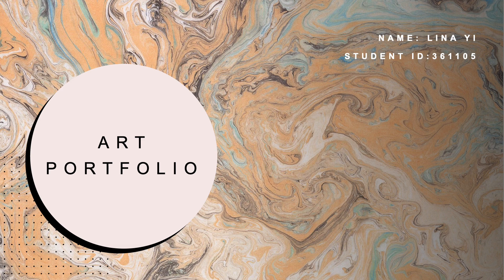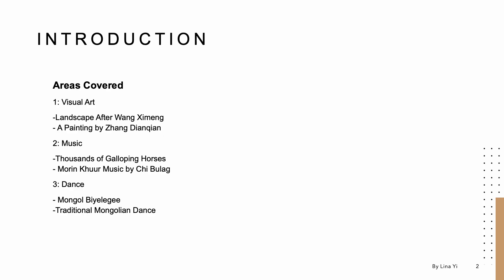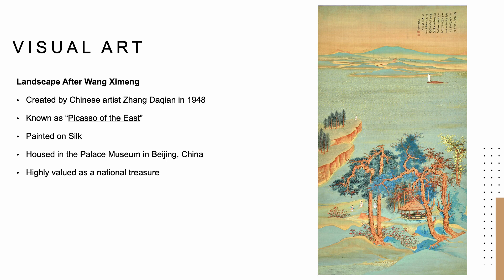Hello everyone, I'm Lina Yi. This is my art portfolio presentation for assignment one. The areas I chose to cover are visual art, where I will discuss a painting by renowned Chinese artist Zhang Dachian; music, where I will talk about a famous piece, A Thousand Galloping Horses by Qi Belge; and dance, where I will be talking about a traditional Mongolian dance, Beidege.